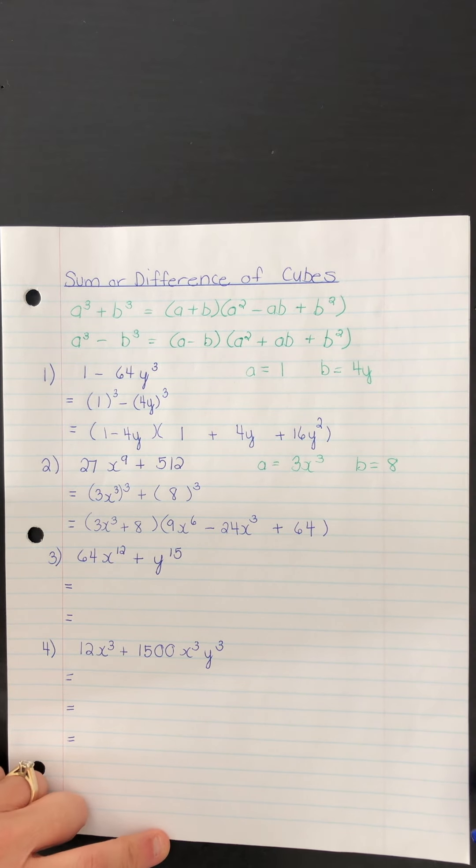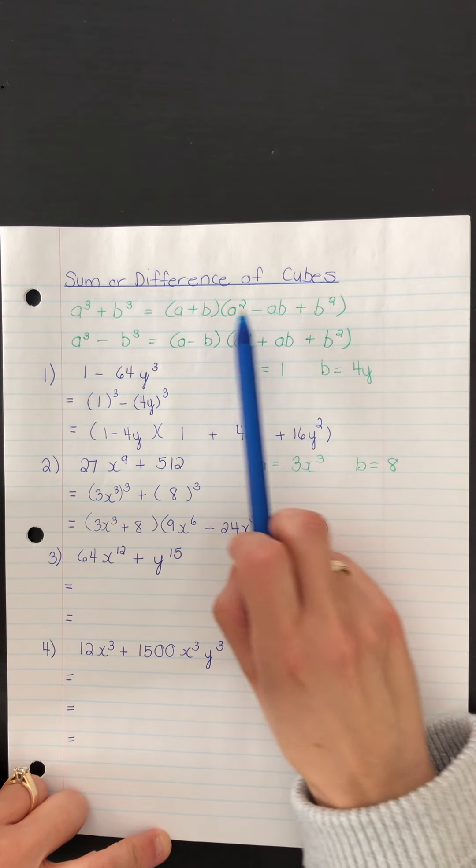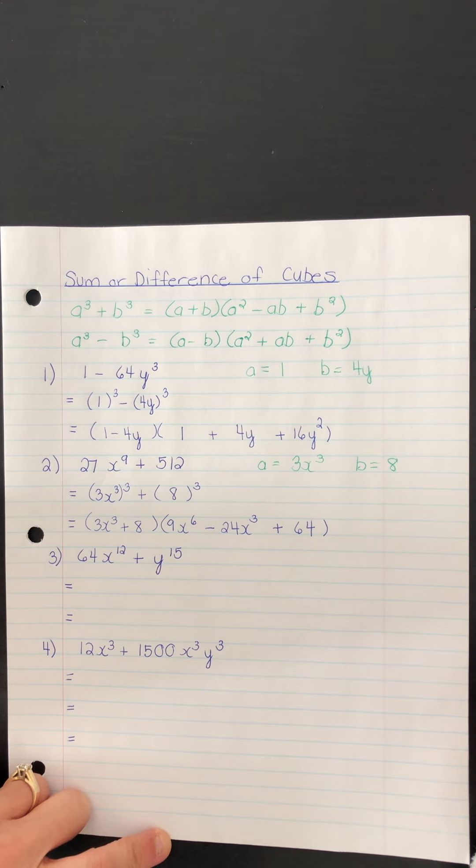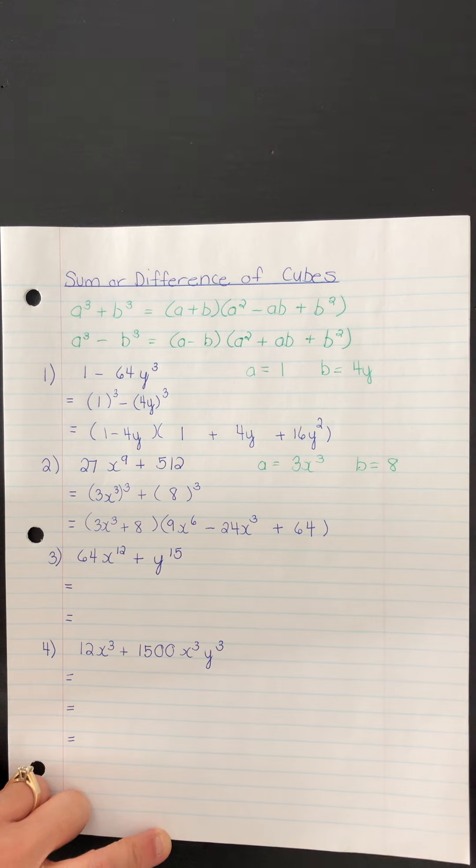And the last term should be b squared. 8 squared is 64. And now that one is fully factored. I should point out that whenever you use these formulas, the trinomial that results here is always prime. So this trinomial will not be factorable. Once we've used the formula, this is not factorable.